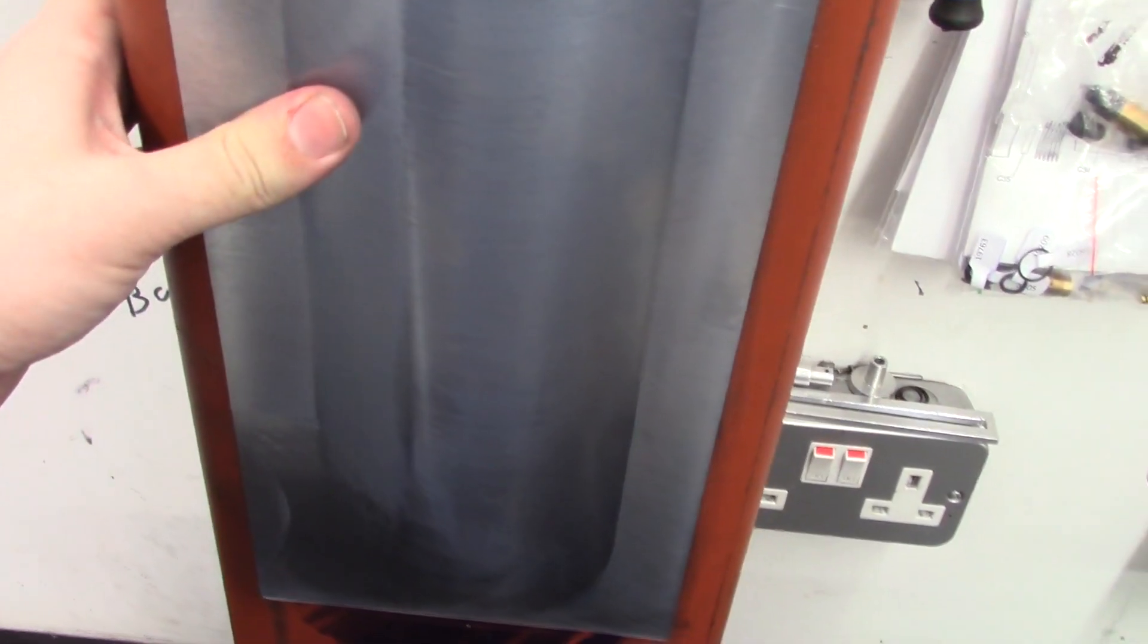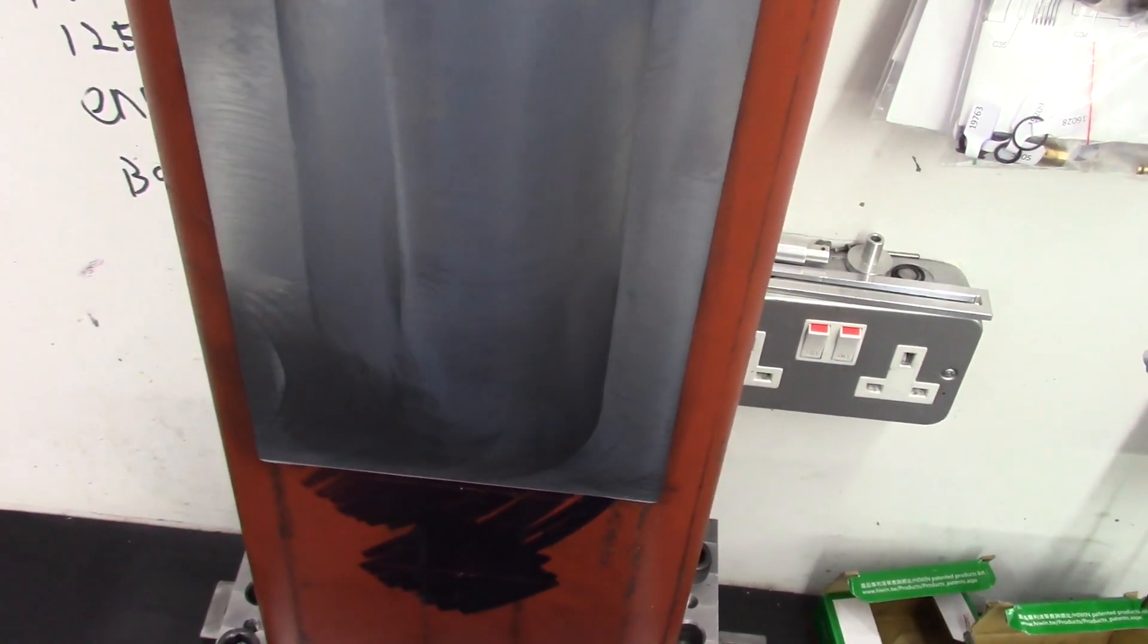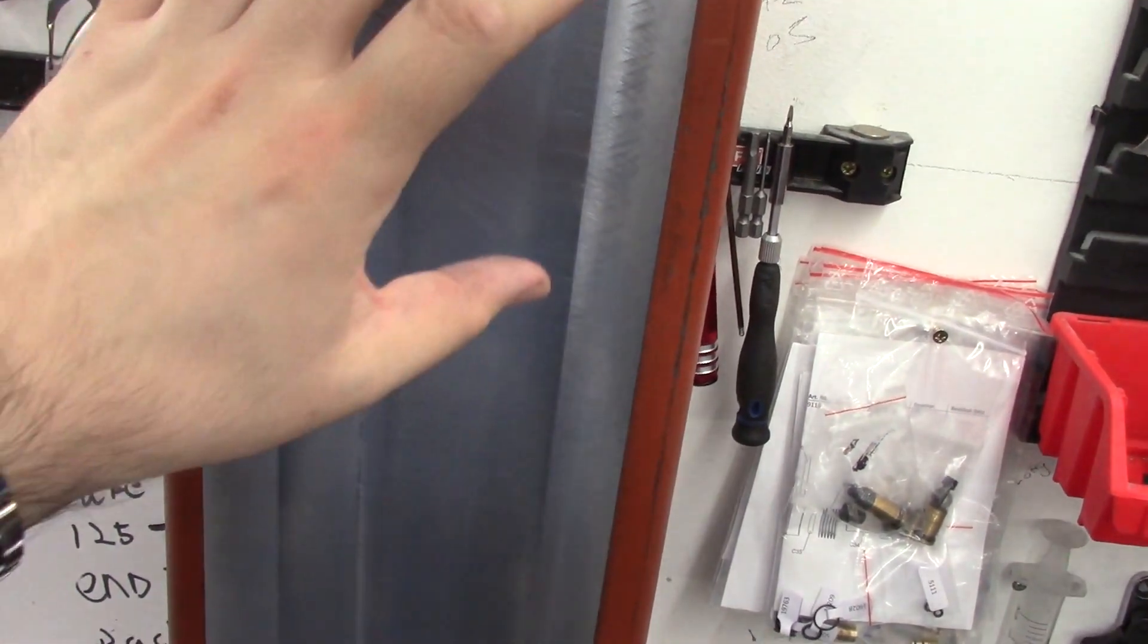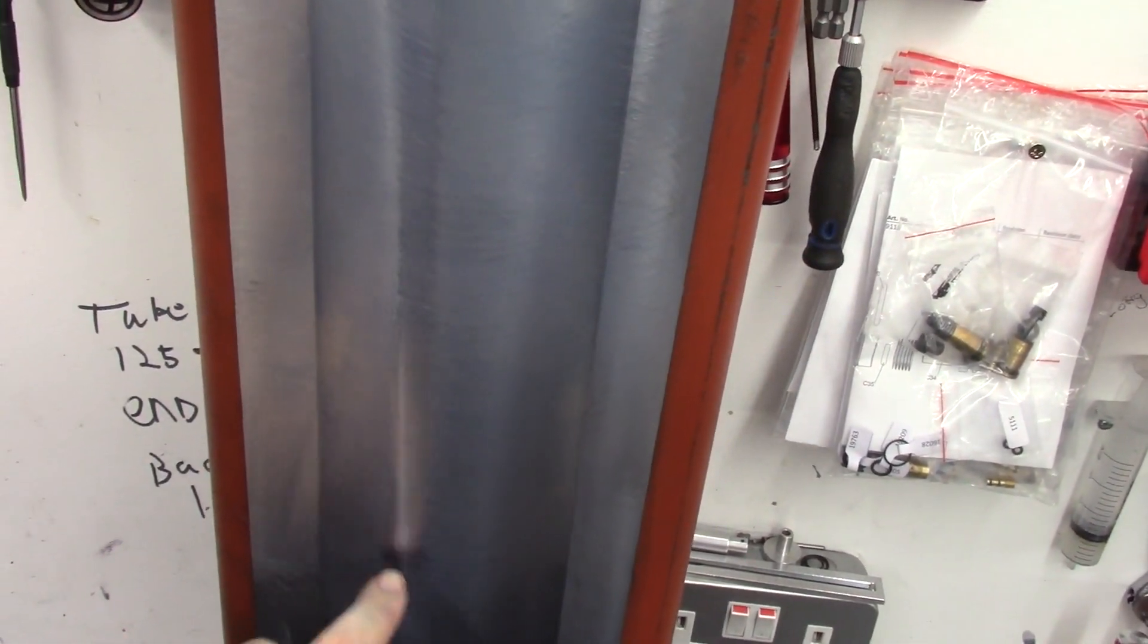Then the column itself is box section, and then I've just machined this flat on the front here so that I can mount a plate and then the rails will go on the plate.